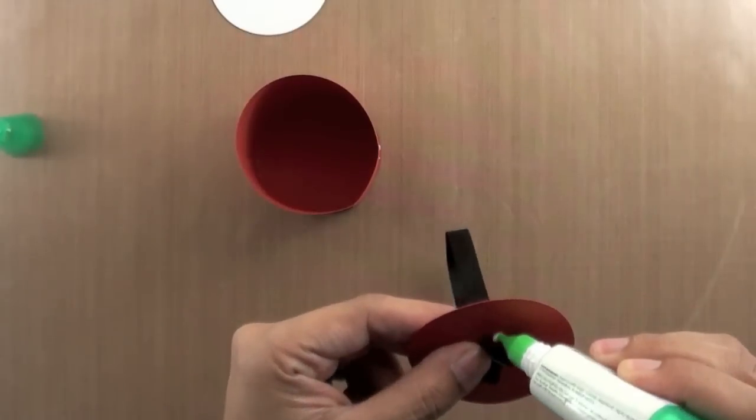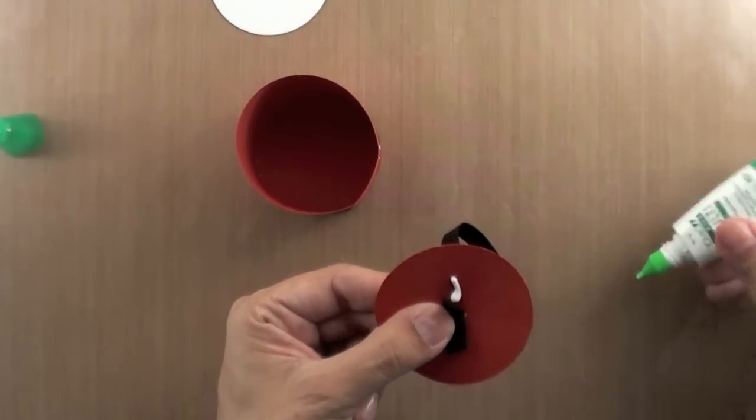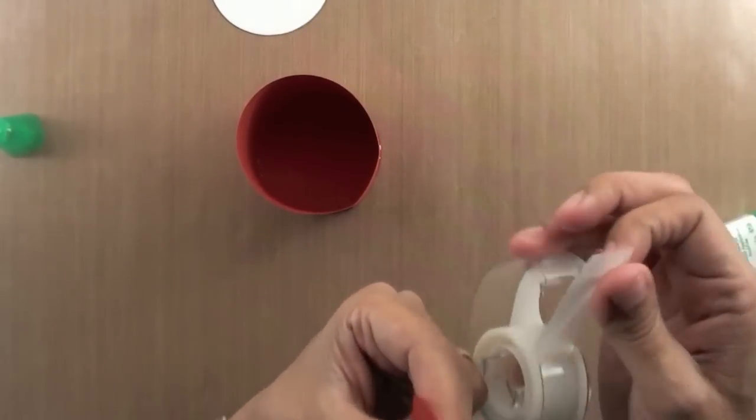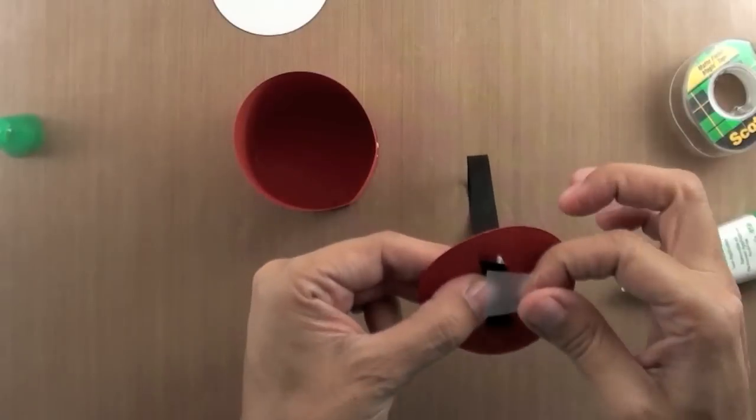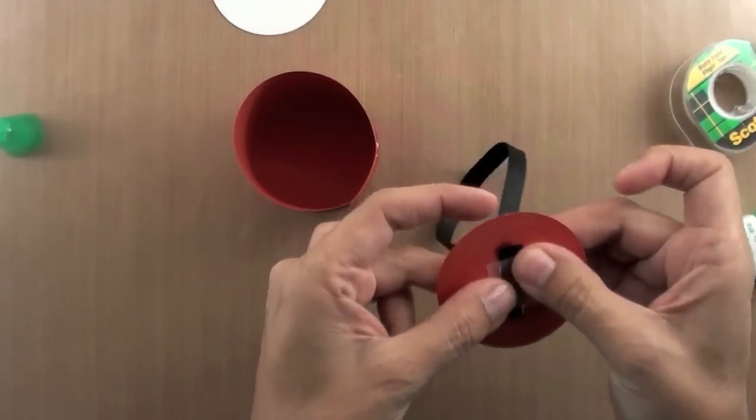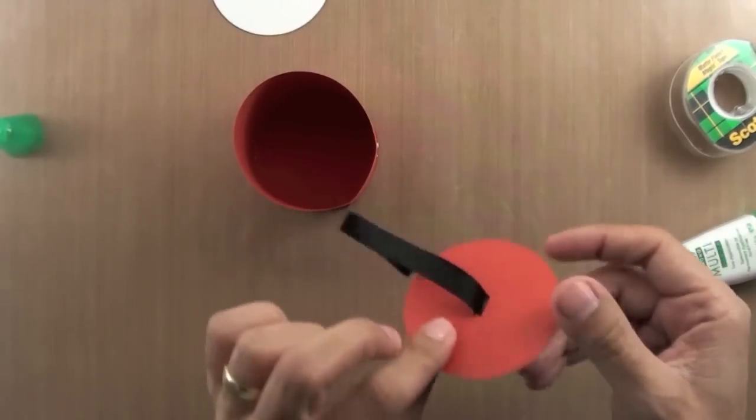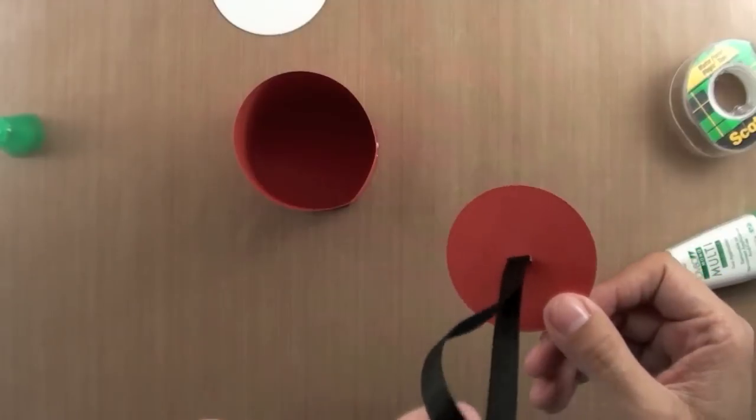Leave about half an inch of it on one end of the circle, just like this. We're going to add a little bit of glue here, and a little bit of glue here, and that will hold, but I like to secure it with a piece of tape, just like so. It doesn't have to look pretty, because you're not going to see this. And this is what it should look like on the other end.